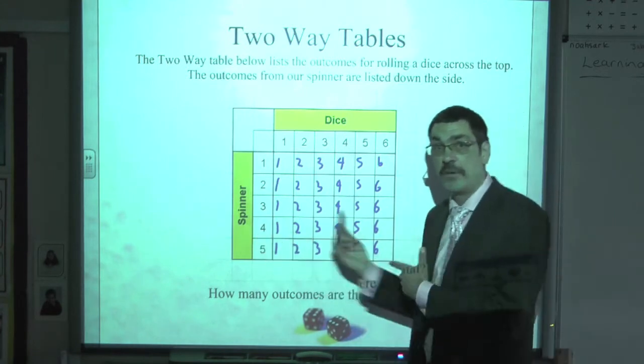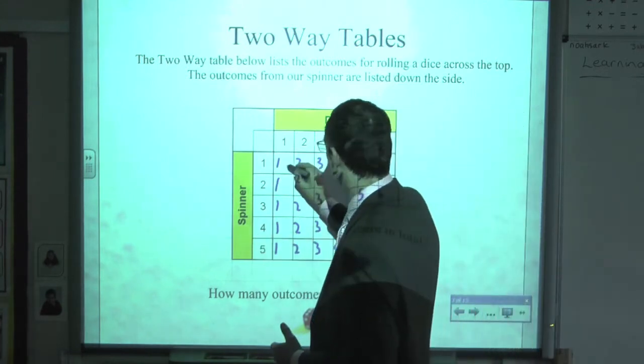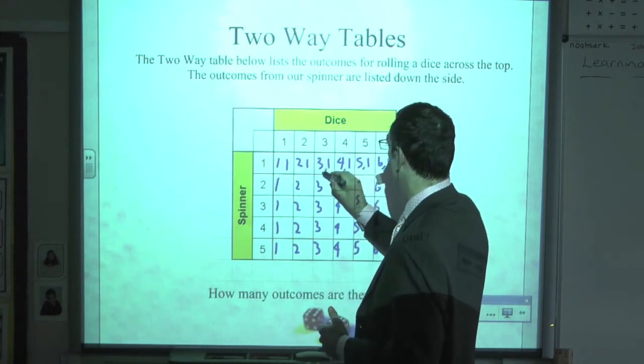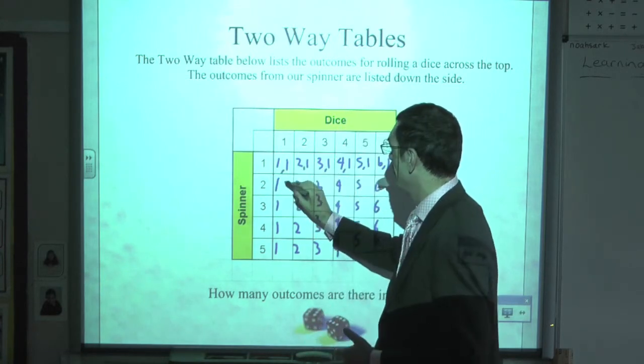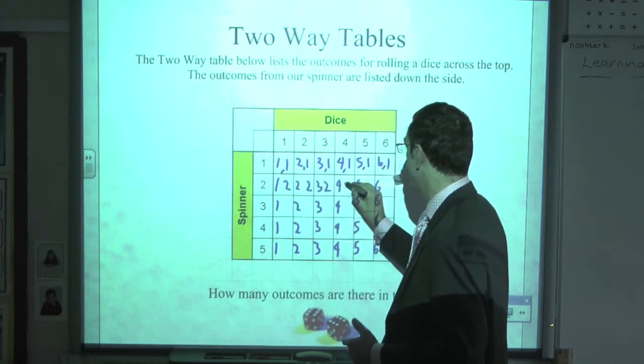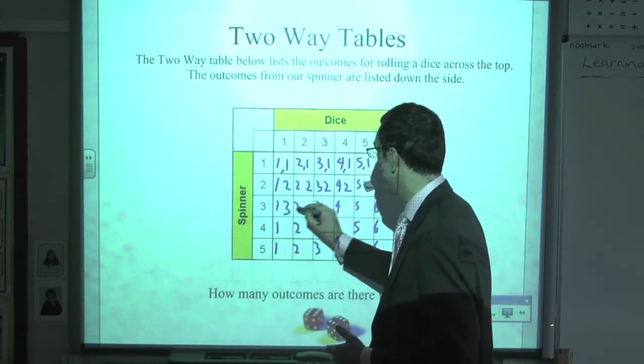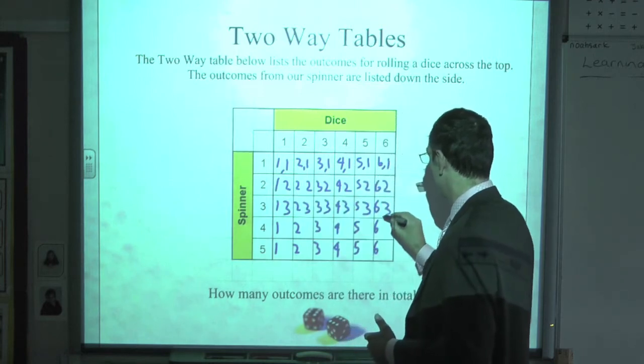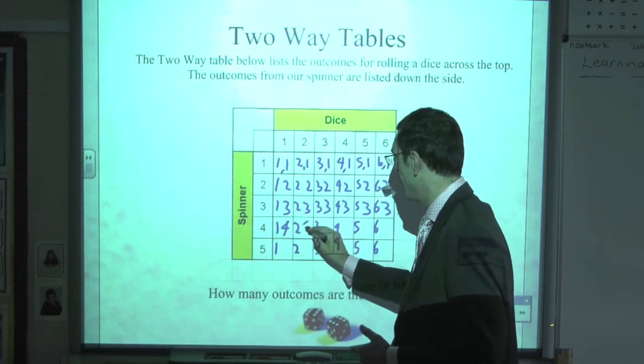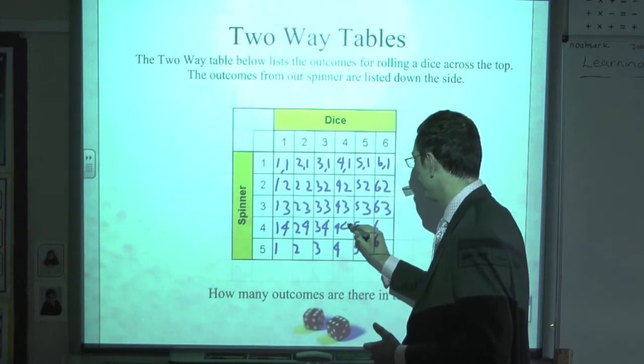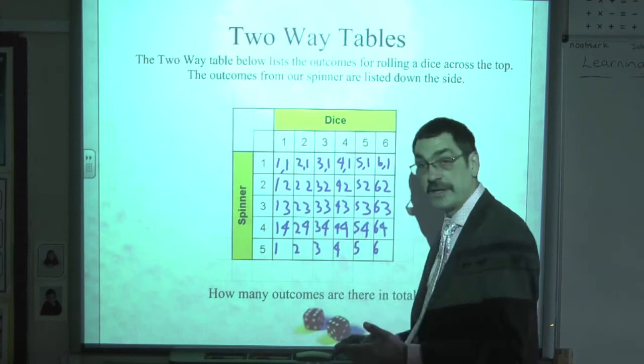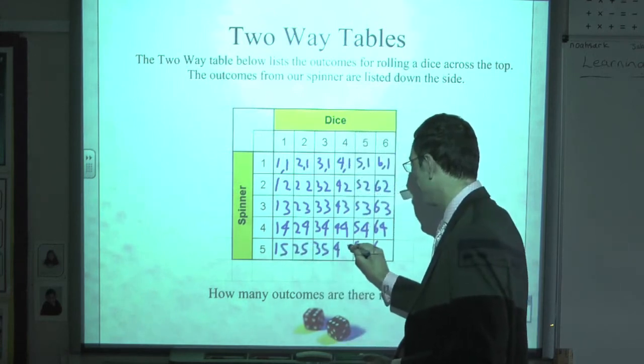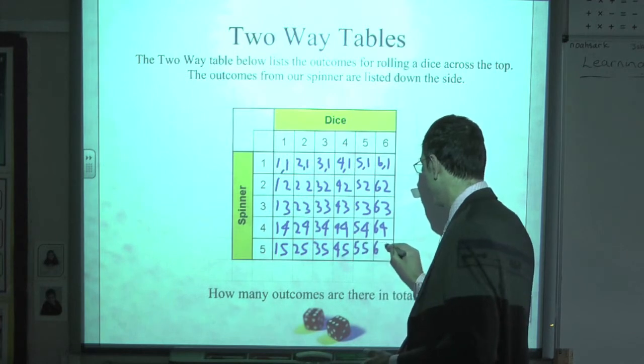And then our rows across. 1, 1, 1, 1, 1. Then 2s, 3s, and some fours. And then our fives to finish off: 5, 5, 5, 5, 5, 5.